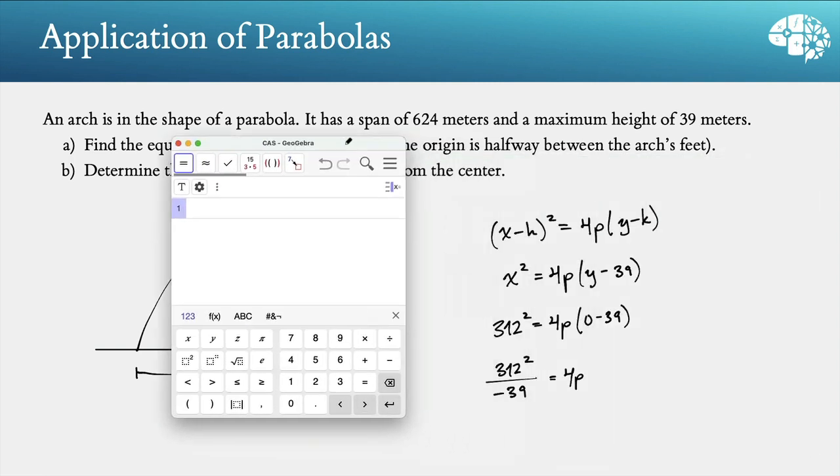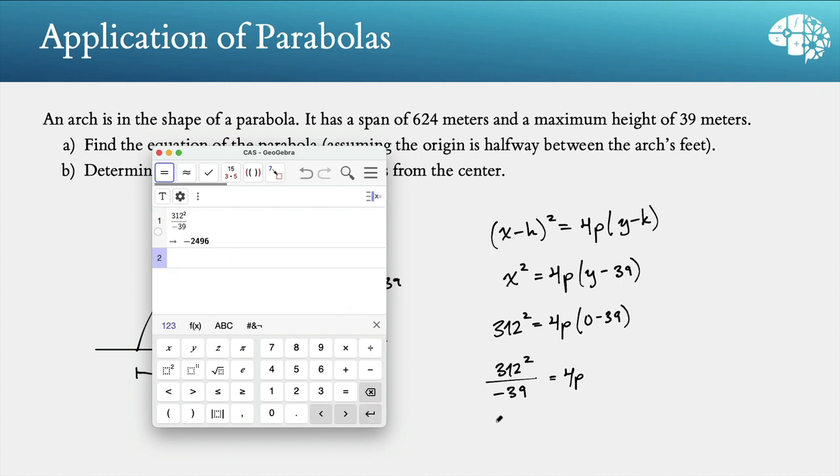So here's the calculator, 312 squared, and then divided by negative 39. And enter, we get negative 2,496.